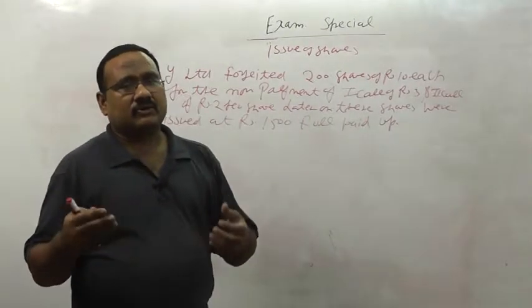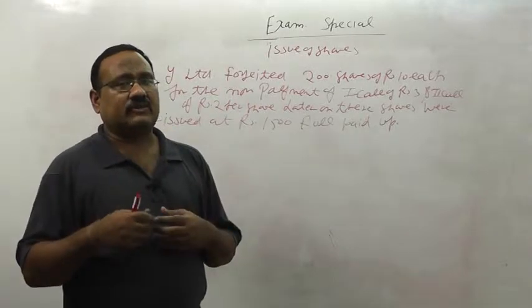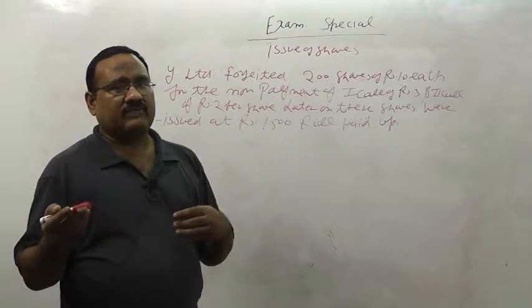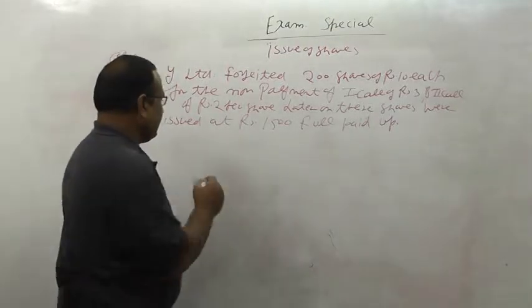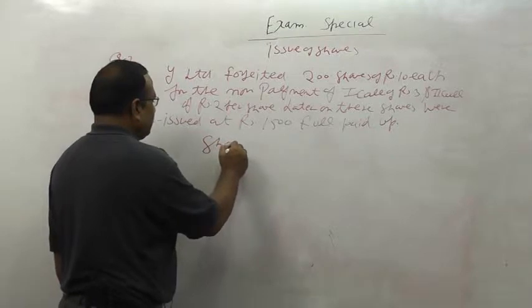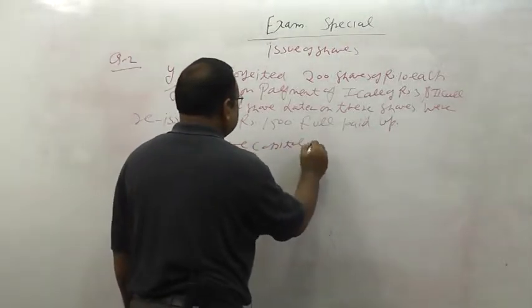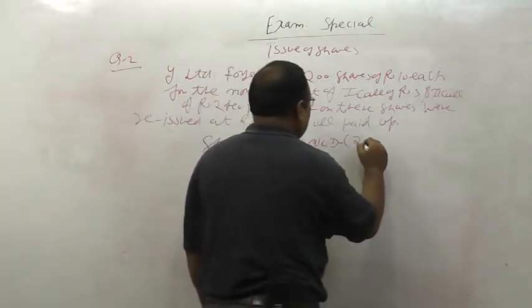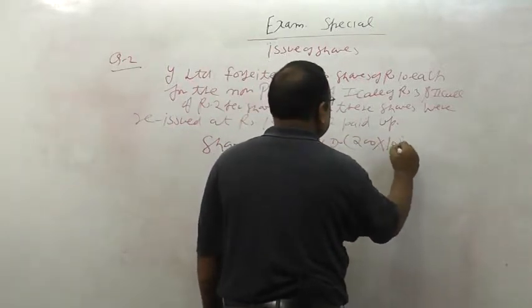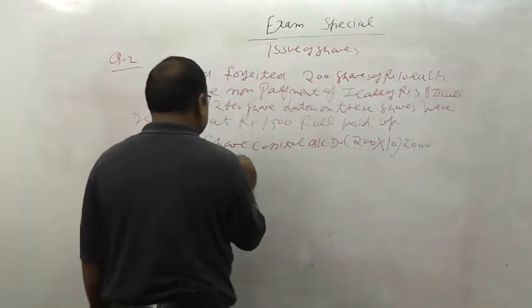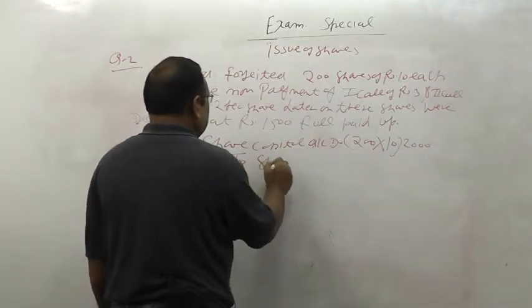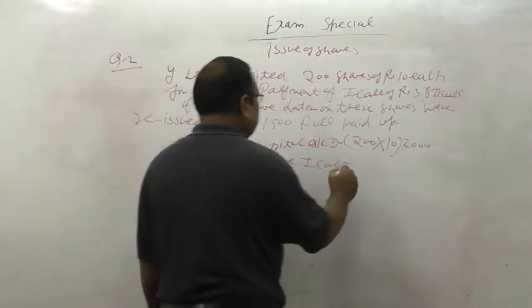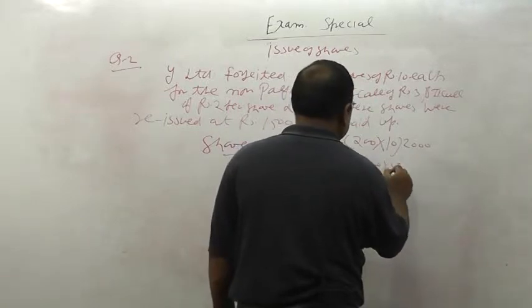How the entry will be done? Total amount we have to take from the shareholder is 2000. He did not pay 600 on first call and 400 on final call. Entry will be direct entry of forfeiture. Share capital account debit, 200 into 10, Rs. 2000. To share first call, you can write equity share first call. First call is 600.